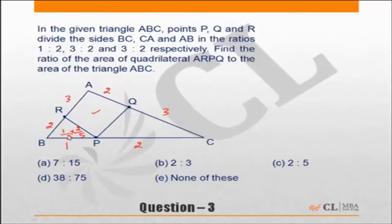So area of this triangle BPR to area of triangle ABC will be 2 by 15. So this will be 2 by 15, 2 by 15 of the entire triangle.